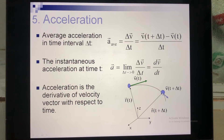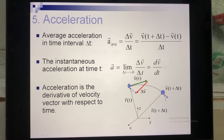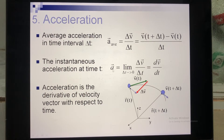To subtract two vectors, you follow the rules: the final vector minus the initial vector gives you delta V, shown here as the red vector. Using that formula, you calculate the average acceleration.